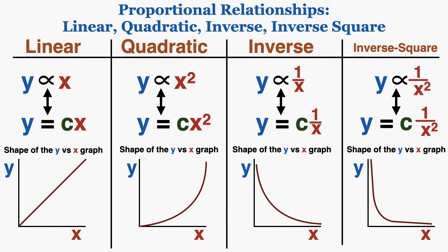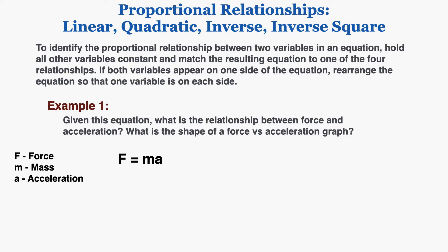Knowing these patterns allows us to take the relationship between two variables in an equation and understand exactly what the graph of those two variables would look like if we held everything else constant. To identify the proportional relationship between two variables in an equation, hold all other variables constant and match the resulting equation to one of the four relationships. If both variables appear on one side, rearrange so that one variable is on each side.